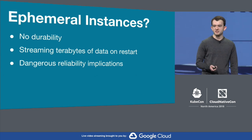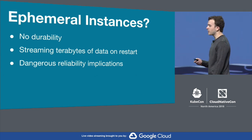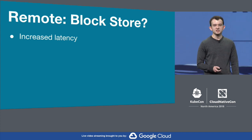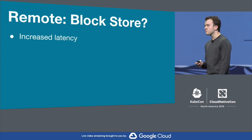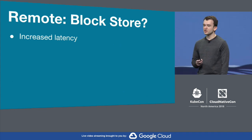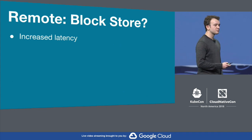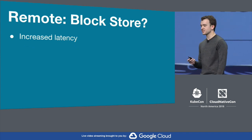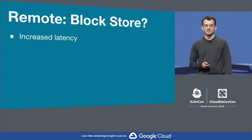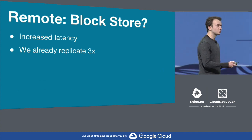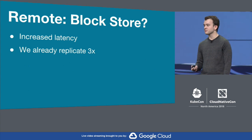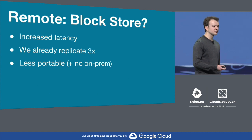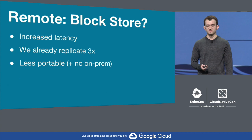What if we stored our state in a more durable manner using something like a remote block store? This is a pretty popular option, but unfortunately the latency guarantees provided by a remote block store didn't really match what we were looking for. M3DB stores all of the monitoring data for Uber's global real-time marketplace, and our customers expect to be alerted as soon as there's an issue — every bit of latency in ingesting and serving metrics counts. It also seemed inefficient to pay someone else to replicate our data slower when we already replicate things three times at the application layer. A remote block store also has different characteristics across different cloud providers and would be potentially out of the question in our internal data centers.